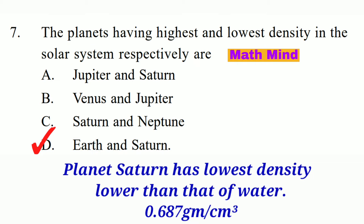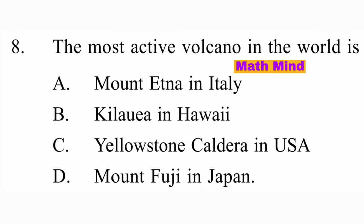Saturn's density is 0.687 grams per cubic centimeter. Question No. 8. The most active volcano in the world is blank. Option B is correct: Kilauea in Hawaii. It is the world's most active volcano.